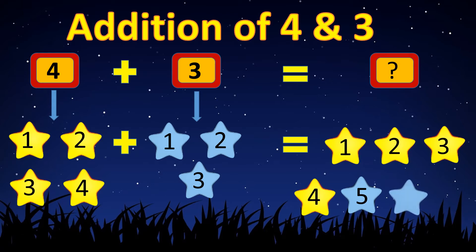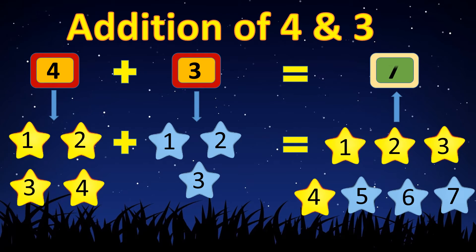Six. Seven. So, four plus three equals seven.